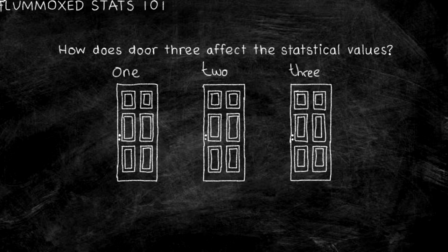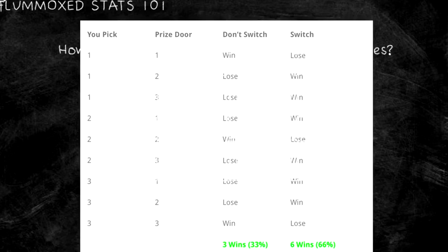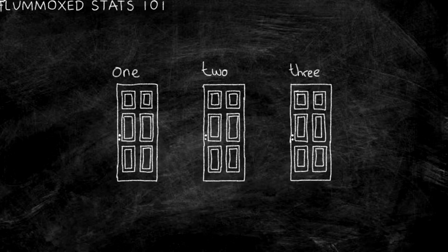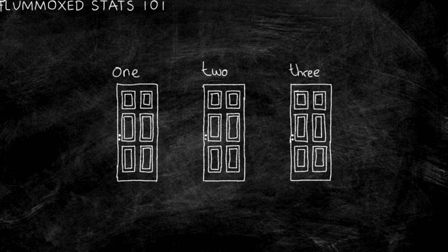Which school of thought is considered right? Well, here's the funny thing. There was some research performed by Paul Erdős, a noted mathematician, observing a computer simulation. As it can be seen from these results, the computer ended up with a 66% win rate when switching doors, meaning it's statistically viable to include the third door within the statistical calculations. So next time you're on a game show, maybe you should ask the host to pick a door — and maybe he'll pick the wrong one.